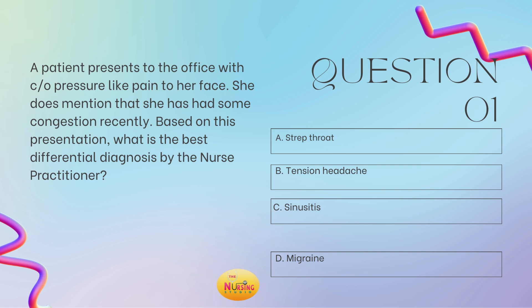I always recommend reading the stem of the question first — that end portion with the question mark — because it allows you to slow down and ensure you're answering what they're actually asking. On exam day when you're nervous, you'll skim through a question, see certain things that look like one plus one equals two, and start creating your own storyline that isn't what the question is asking. So read that stem before you get into the scenario.